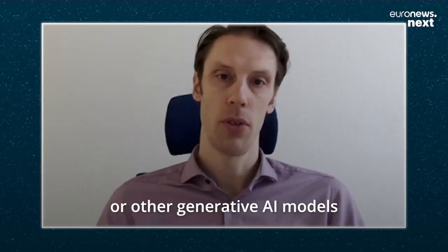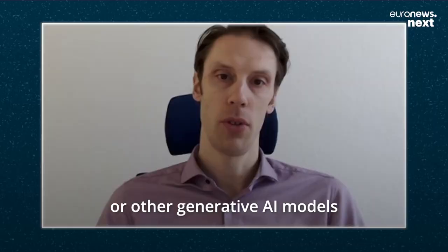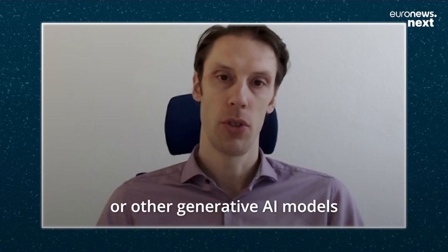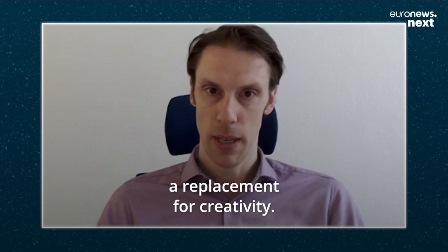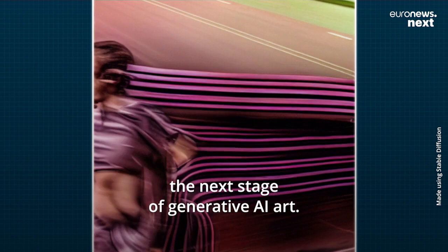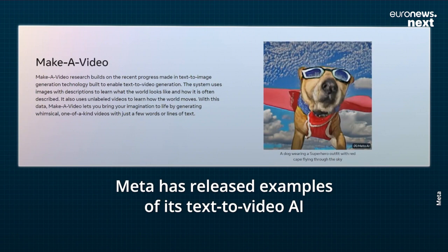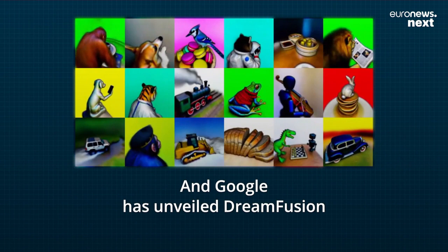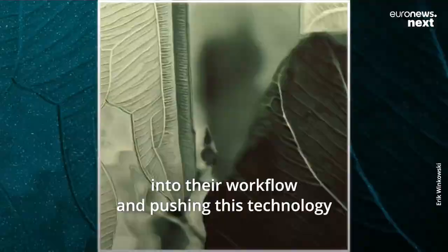Researchers and tech companies are already racing towards the next stage of generative AI art. Meta has released examples of its text-to-video AI that's in development, and Google has unveiled DreamFusion, a text-to-3D AI. Some visual artists have already started incorporating generative AI tools into their workflow and pushing this technology to create animated art.